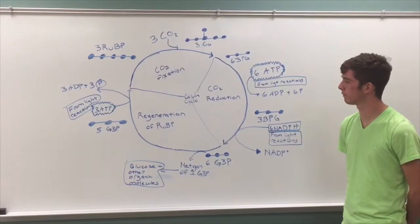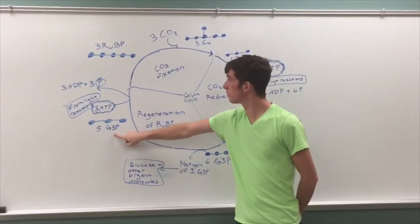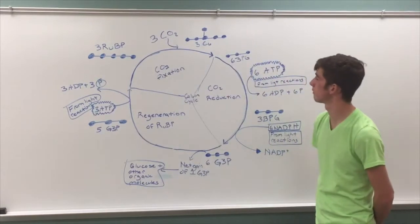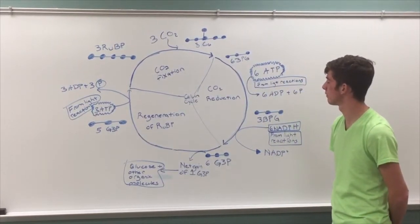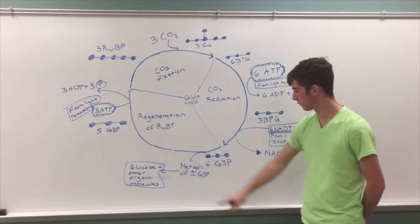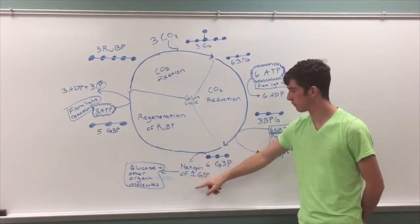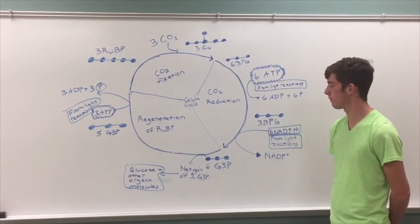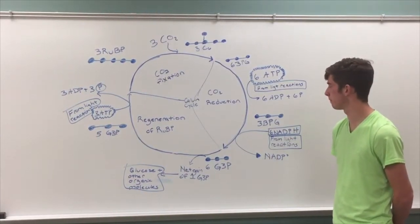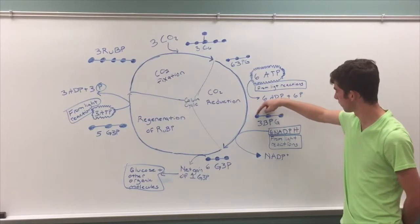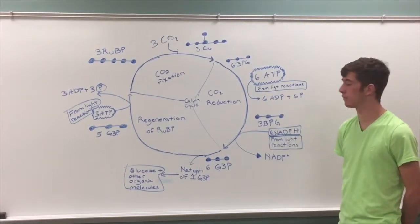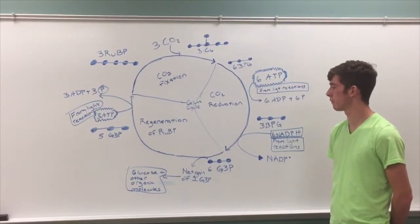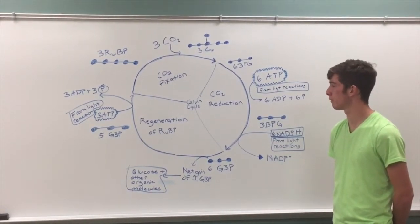Because five G3P are needed to reform three RUBP, it takes three turns of the cycle to achieve a net gain of one G3P. Two G3P molecules are needed to form glucose. Each circle in the carbon cycle diagram is a carbon atom. It is important to keep track of the carbon because the carbon throughout the cycle wants to remain balanced. Also, RUBP stands for ribulose 1,5-bisphosphate.